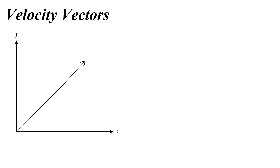So we will call it v, that's what we'll label it. And remember that the length of the arrow represents the magnitude of the vector, and the direction that the arrow points, or theta, is its direction.